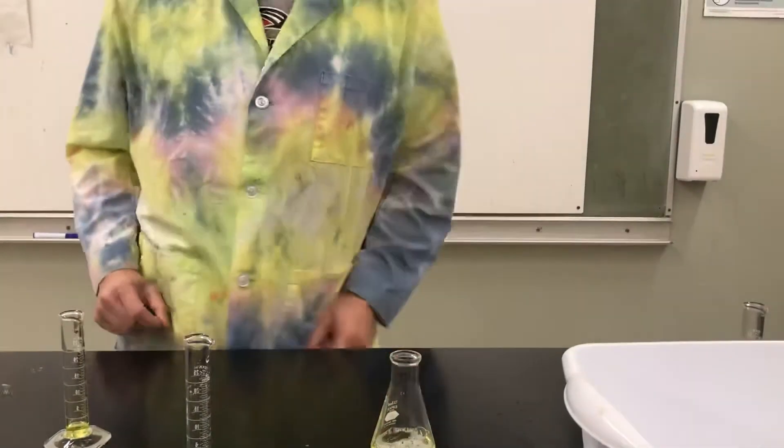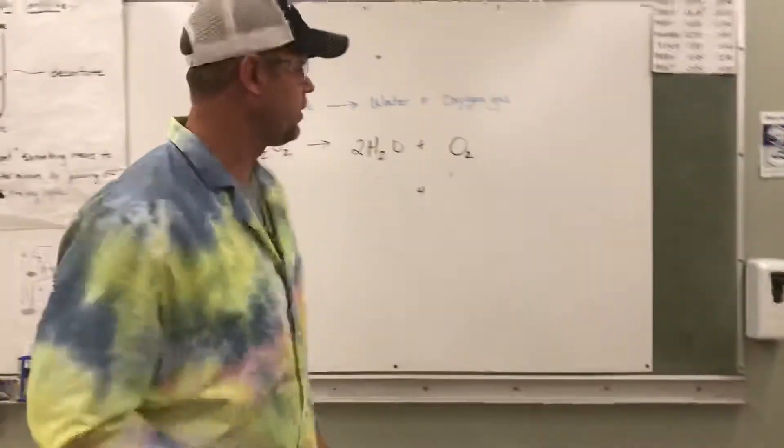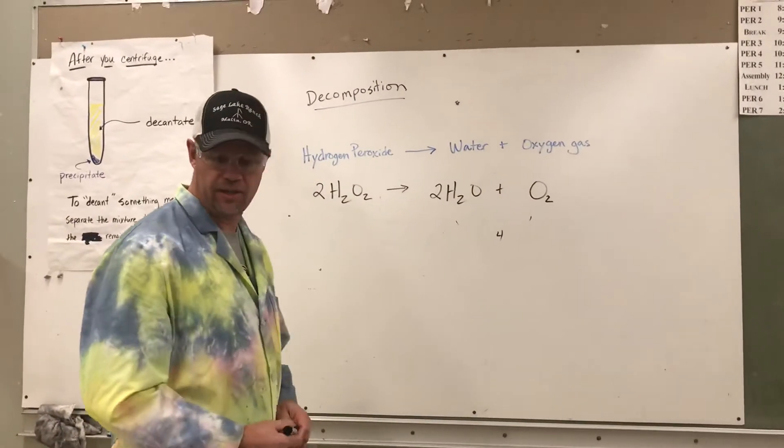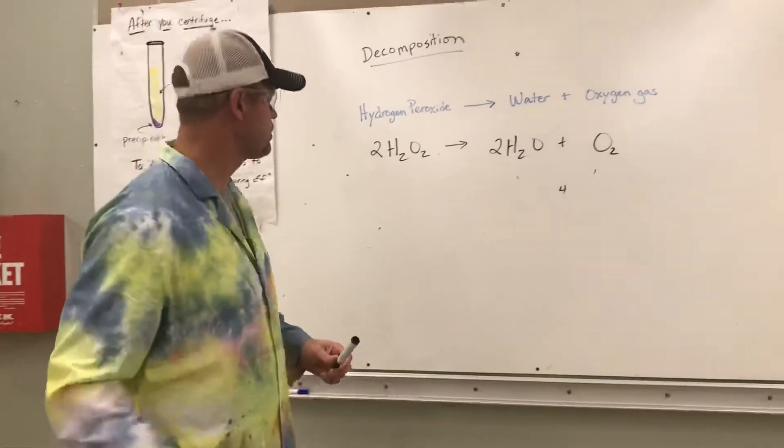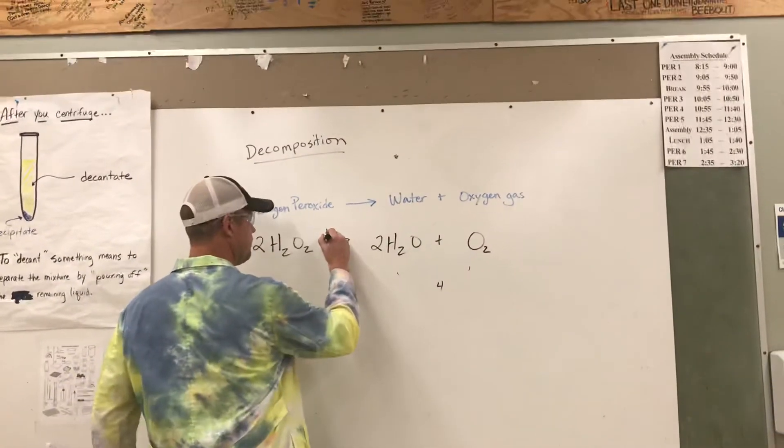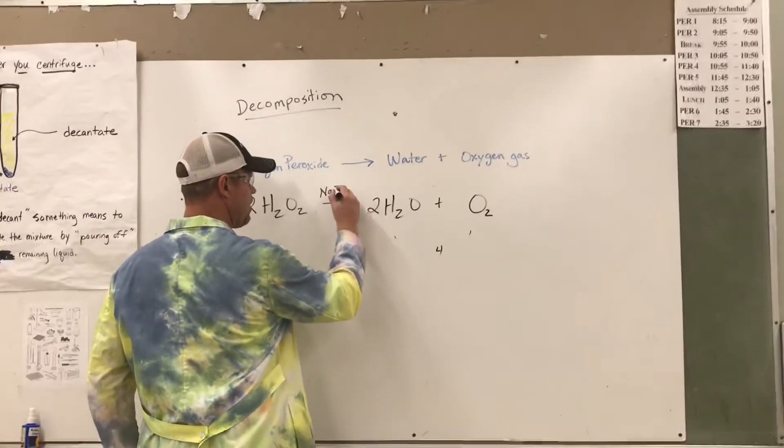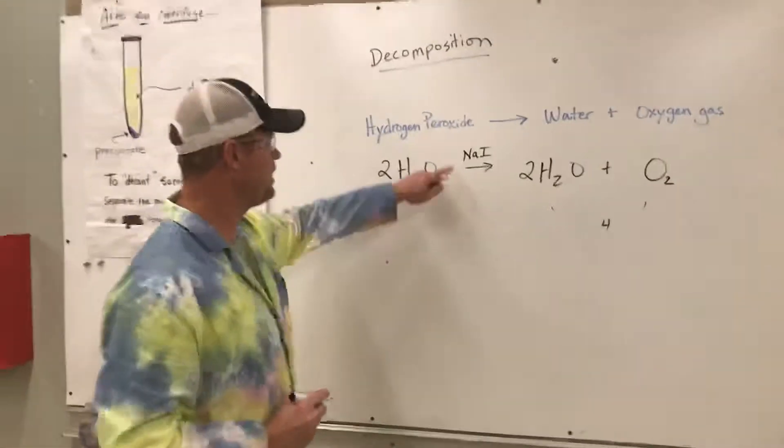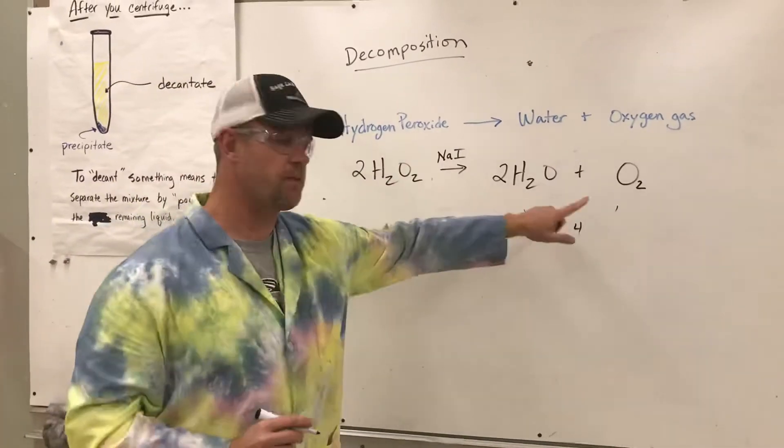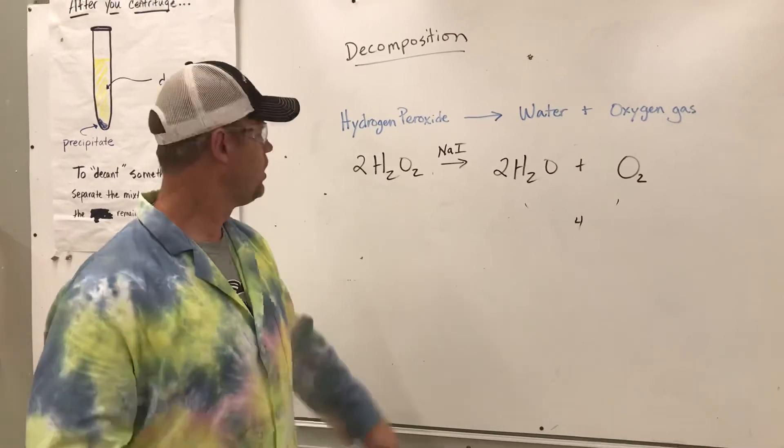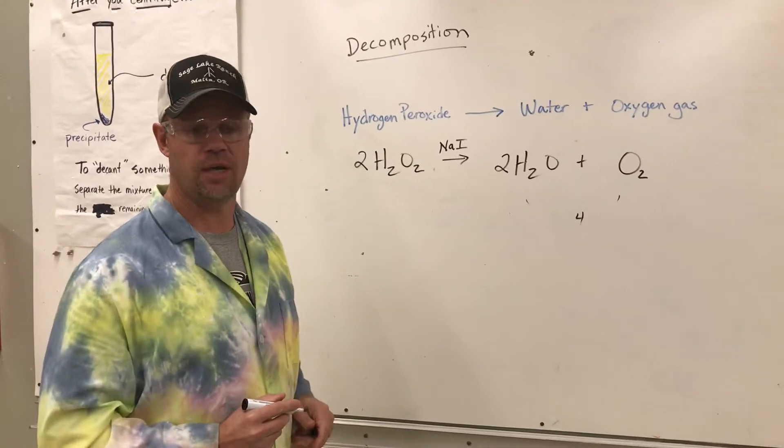So in comes something new. We're going to add what's called a catalyst. And the catalyst I'm adding this time is called sodium iodide. Now, this happens on occasion. Sodium iodide is a chemical that if I add, it doesn't affect this reaction at all. It does not get involved. But it does speed the reaction up.